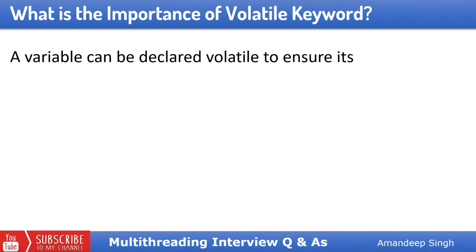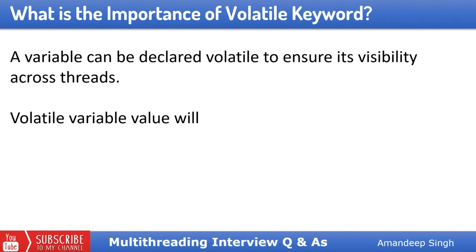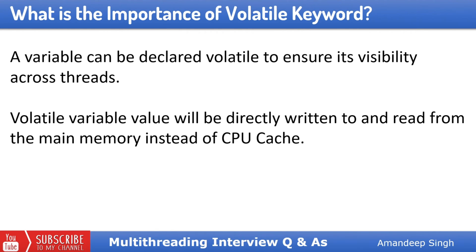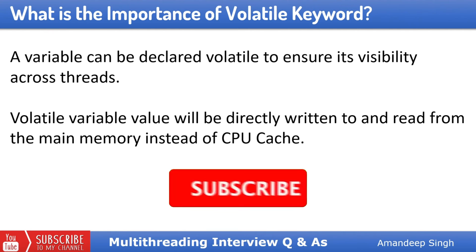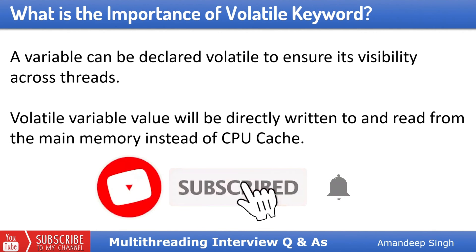This problem can be fixed using the volatile keyword. If we declare a variable volatile, then any thread accessing or modifying its data will not keep it in the CPU cache. Its value will be updated directly to memory. Not only updates, but all reads will also happen from the main memory and not from the CPU cache.